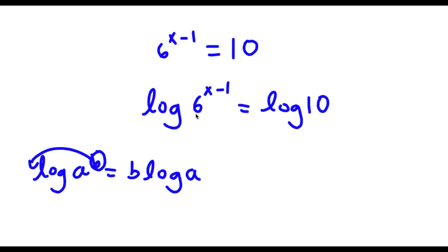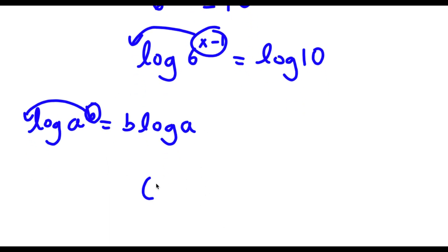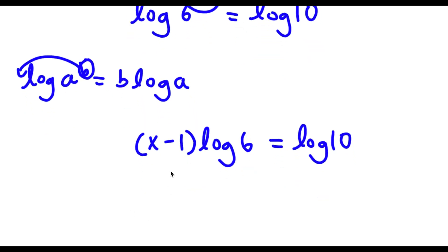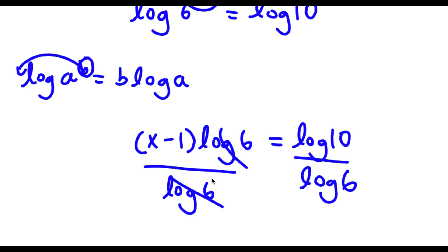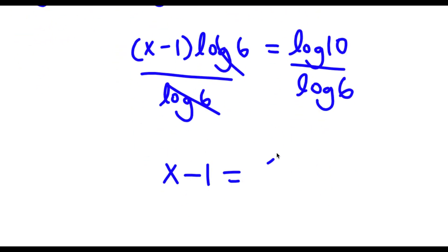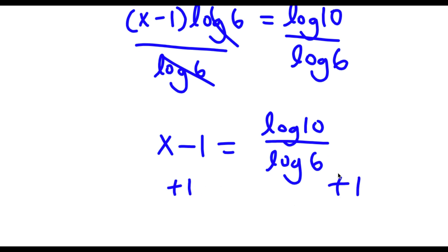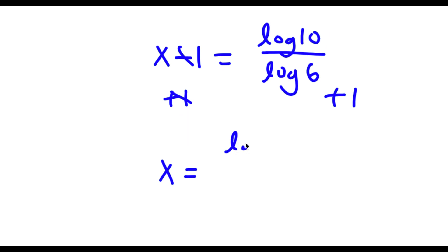So in this case, log of 6 to the power of x minus 1 — I can move x minus 1 to the front — so this equals x minus 1 times log 6, which is equal to log 10. Now if I divide both sides by log 6, those two cancel out and I'm left with x minus 1 is equal to log 10 over log 6. Now I'm going to add 1 on both sides, so x is equal to log 10 over log 6 plus 1.